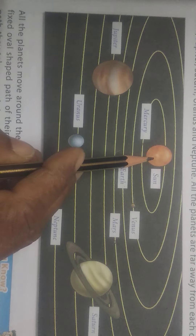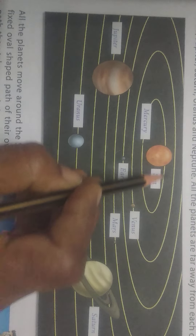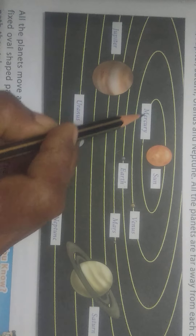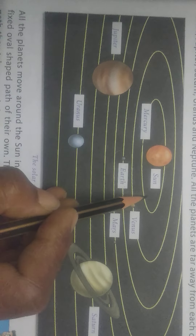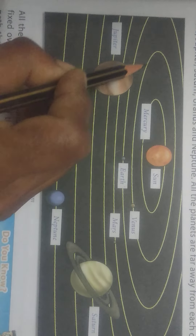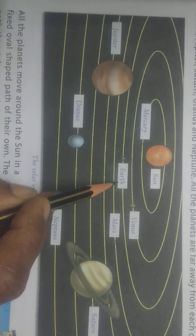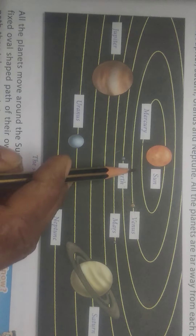Look at this clear picture — this is our solar system, this is the sun and all these are 8 planets. This is the orbit of Mercury — yeh yellow line se orbit hai. This is the orbit of Venus — Venus ka yeh path hai. This is Earth's orbit, this is Mars' orbit. Har ek planet apne-apne orbit par hi revolve karte rehte hain.